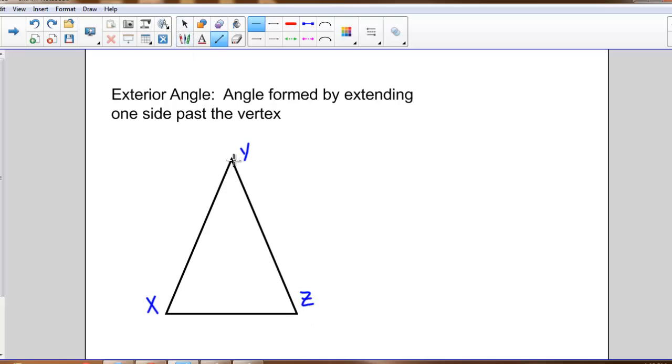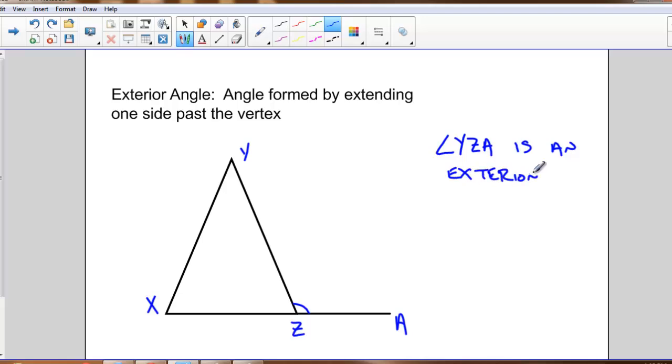So if I look at this triangle XYZ, and I imagine taking side XZ and letting it continue on past the vertex, doing that creates an exterior angle. That angle YZA is an exterior angle.